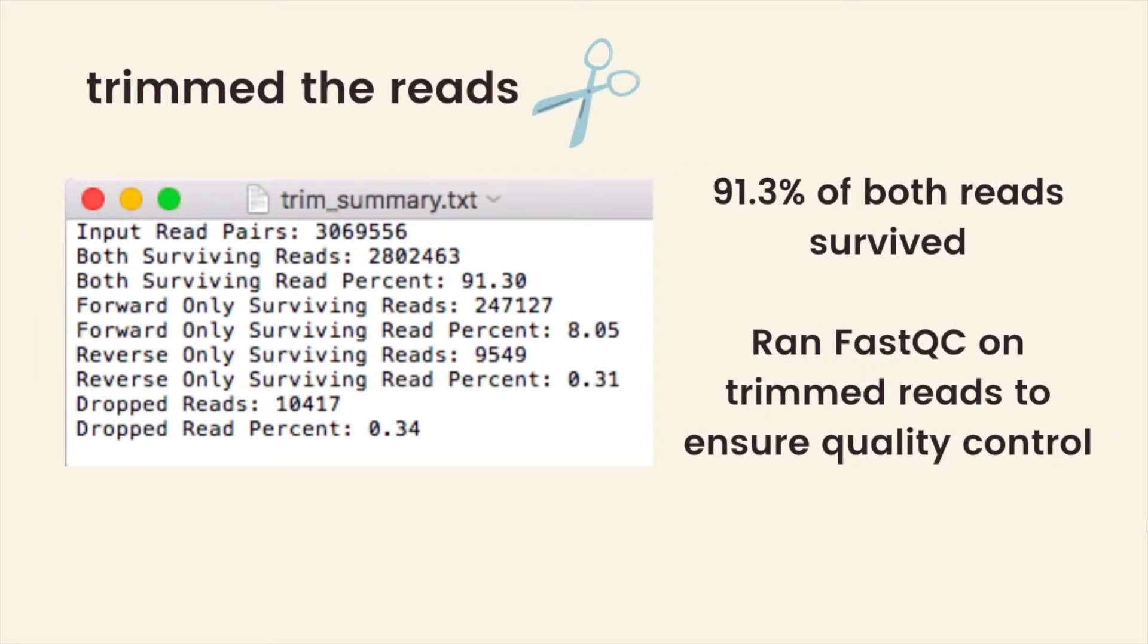To remove these errors, I trimmed the raw reads, resulting in 91.3% of both reads surviving. Since reduction in read lengths could affect the contiguity and completeness of the assembled genome, I ran FastQC on these trimmed reads to ensure quality control.